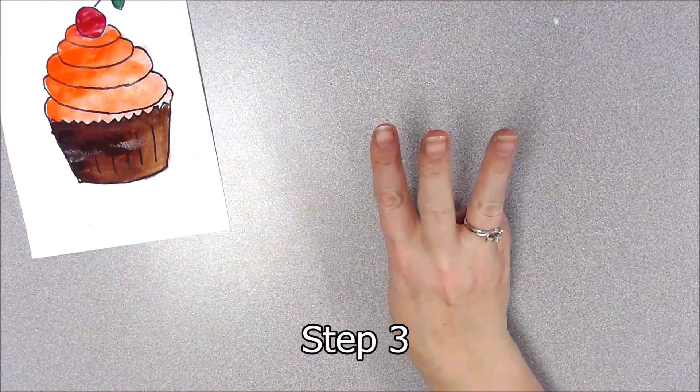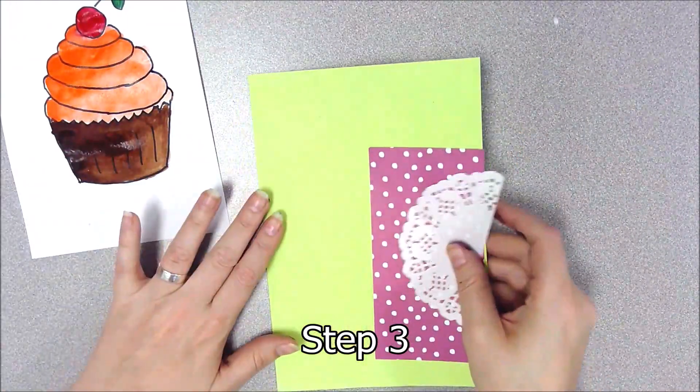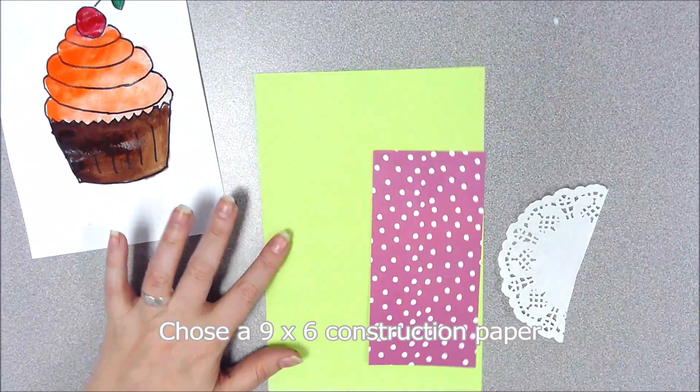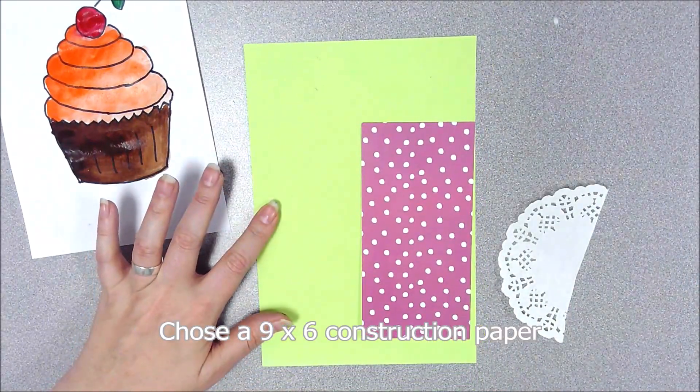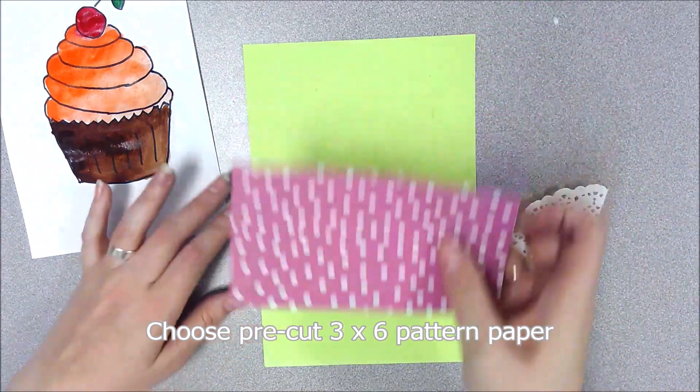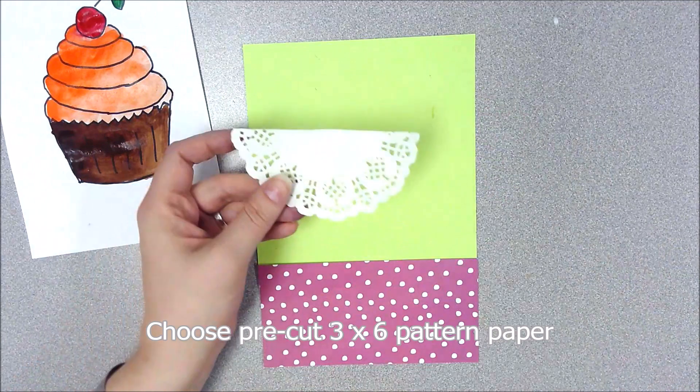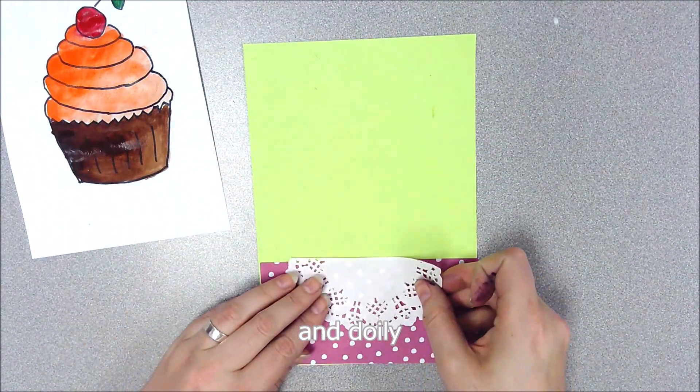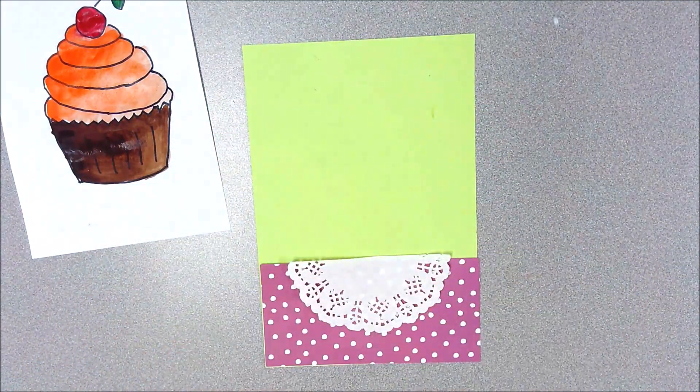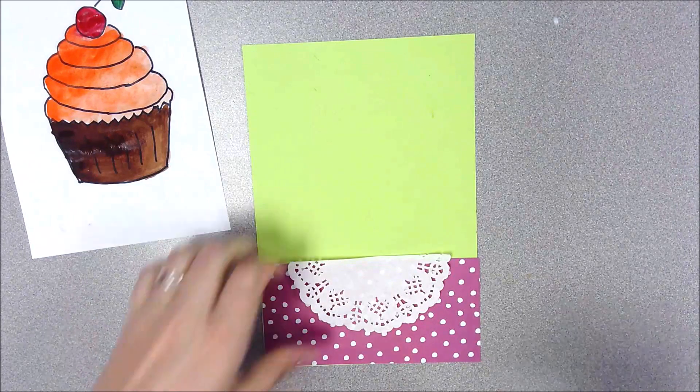for step three, you're going to choose a piece of construction paper. You're going to choose a pre-cut little cute tablecloth, and I've got these little doily leaves. And it's going to go right here. Alright,